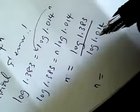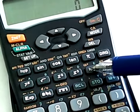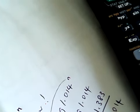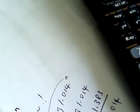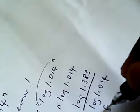Okay, so N is equal to, so you actually have to use a calculator. So this is the calculator. You see this, that is log. So you can go log, log 1.383, divided by log 1.014. Okay, so the answer is 28.6.